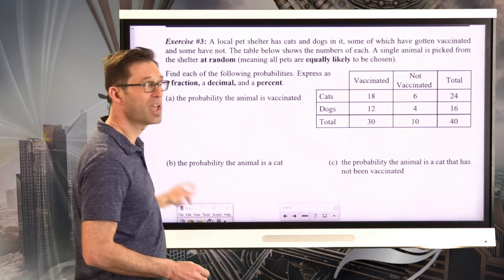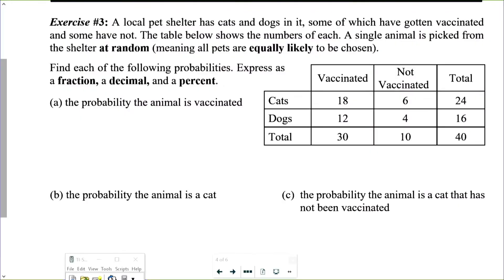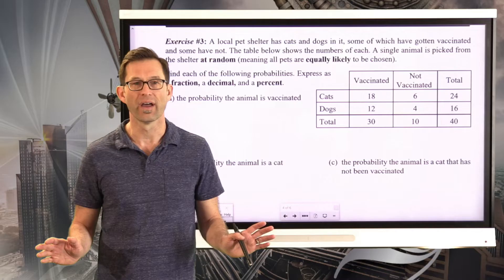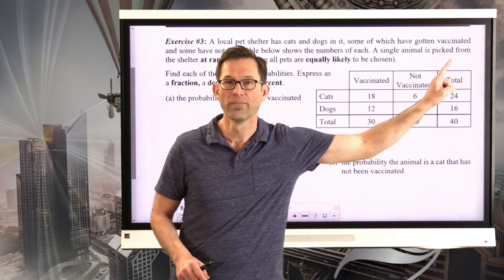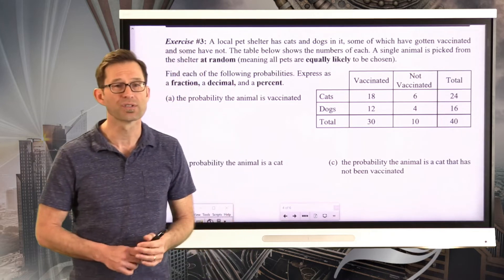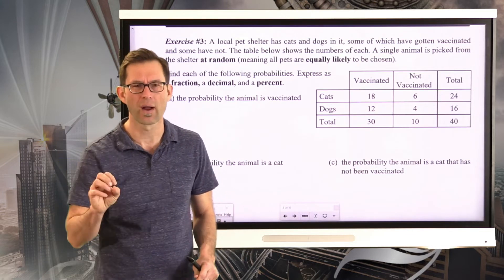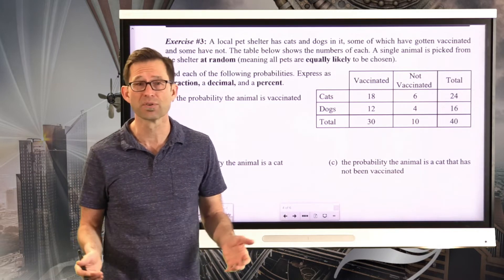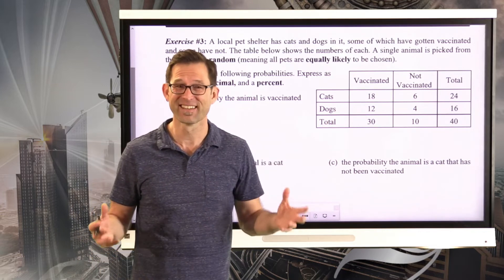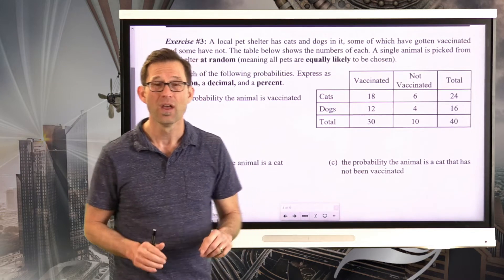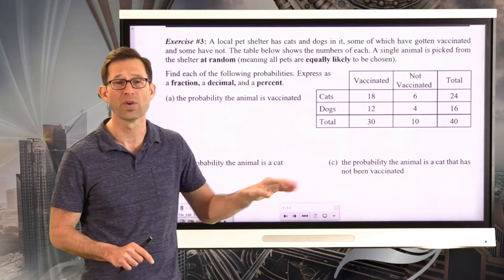Now let's look at an example using a table. In exercise 3, a local pet shelter has cats and dogs, some vaccinated and some not. A single animal is picked at random, meaning all 40 pets are equally likely to be chosen. We need to find probabilities expressed as a fraction, decimal, and percent. The sample space is all 40 pets. Let's find the probability the animal is vaccinated.